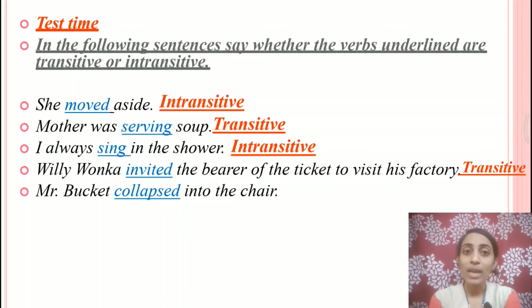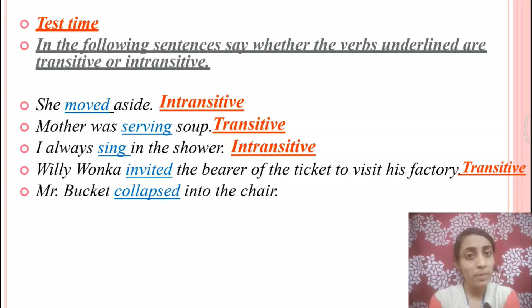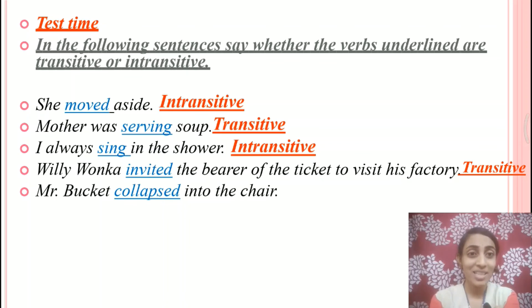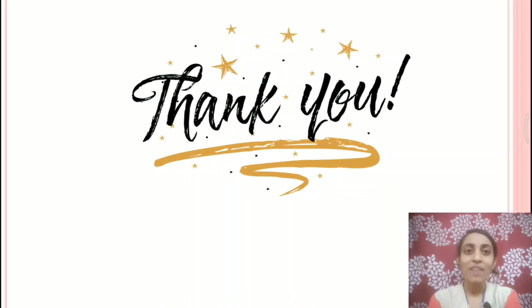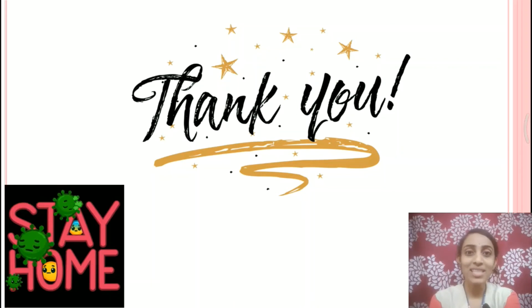Next sentence: 'Mr. Bucket collapsed into the chair.' What did Mr. Bucket collapse? No answer. Whom did Mr. Bucket collapse? No answer. No answer means no object, but the meaning of the sentence is complete. So the verb 'collapsed' is an intransitive verb. Hope you all understood the topic well. We shall meet in the next class — till then, stay home, stay safe!